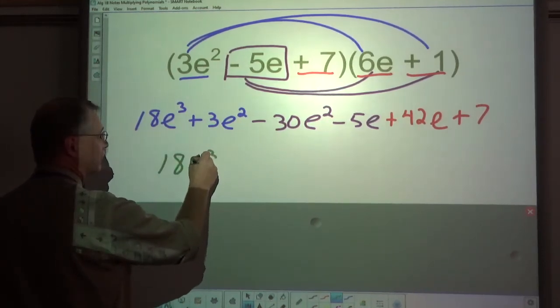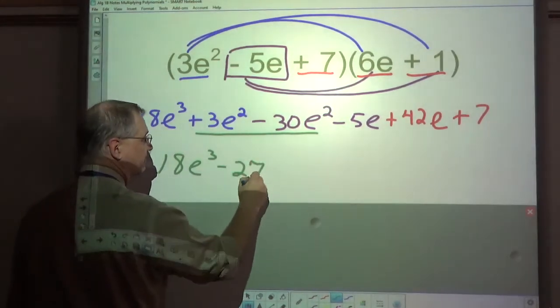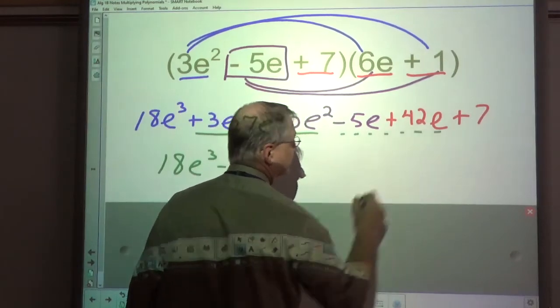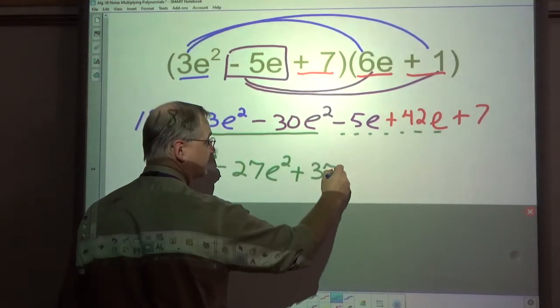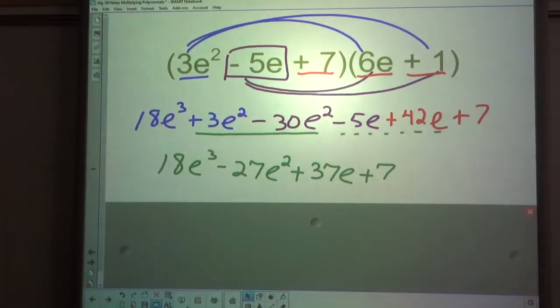18e to the third. These two are like terms. That leaves me with negative 27e to the second. These are like terms. That would be a positive 37e plus 7. And there you have multiplying a trinomial times a binomial.